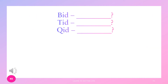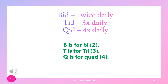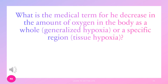BID, TID, and QID mean what? BID is twice daily — B stands for bi. TID is three times a day — T is for tri. QID is four times a day — Q stands for quad. What is the medical term for a decrease in the amount of oxygen in the body? Generalized hypoxia, or in a specific region, tissue hypoxia.